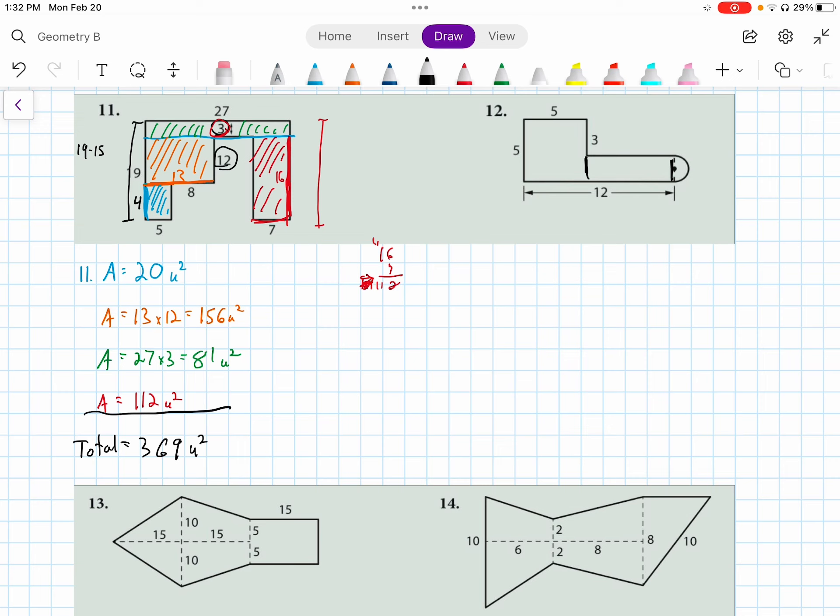This first square is simply a 5 times 5. So that square is 25 or 5 squared units squared.